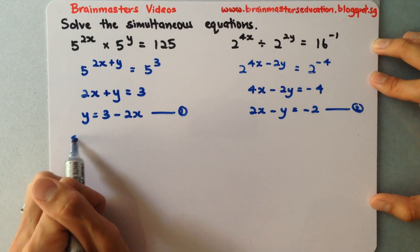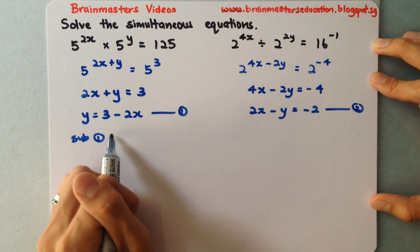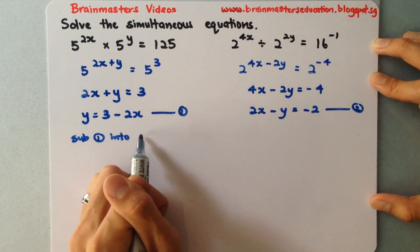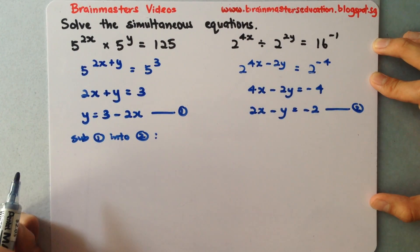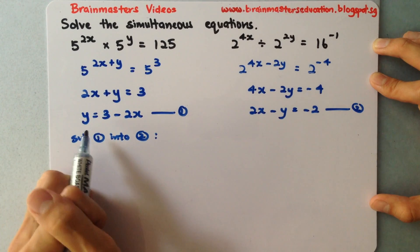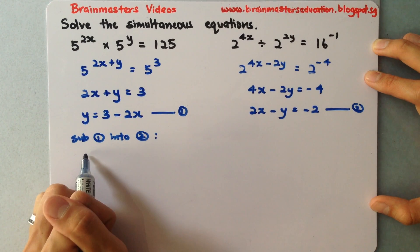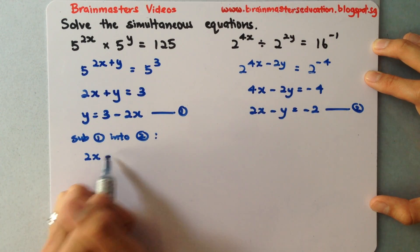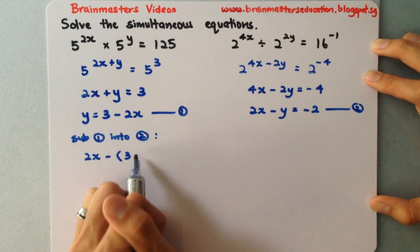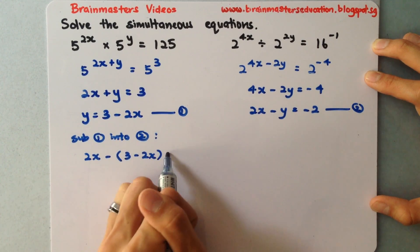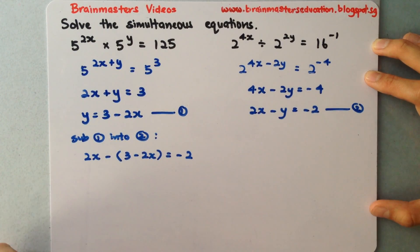So what I'll do is, I'll substitute equation 1 into equation 2. So whenever I see a y in equation 2, I'll change it to 3 minus 2x. So over here, I'll have 2x negative. You must watch out for the negative when you do this. So this is the equation here I have.